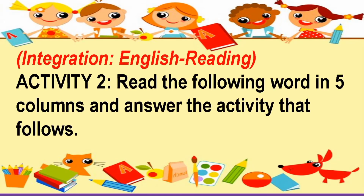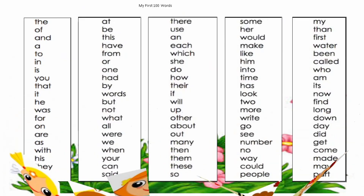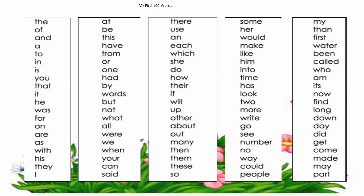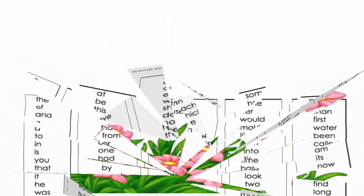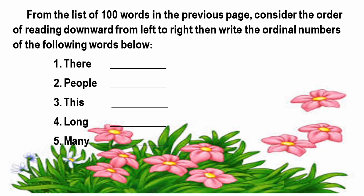What Can I Do? Activity two — Integration: English reading. Read the following words in five columns and answer the activity that follows. Write your answer on paper. Here is the list of words that will serve as a guide in answering our questions. From the list of 100 words on the previous page, consider the order of reading downward from left to right, then write the ordinal numbers of the following words. Your teacher will give you a copy of the list of words on a separate sheet of paper so you can answer the questions.